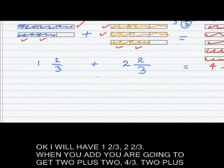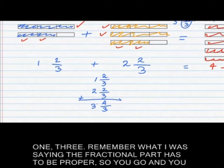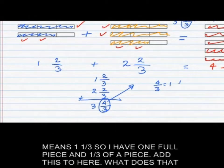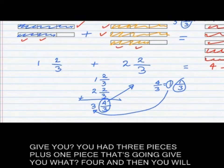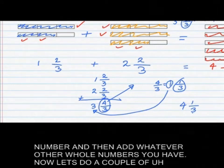Writing it vertically: one and two-thirds plus two and two-thirds. Two plus two gives four-thirds, and two plus one is three. Remember, the fractional part has to be proper. So figure out what four-thirds is — since it's improper, convert it: four-thirds is one and one-third. Add that to the whole number part: three pieces plus one piece gives four, and then you have one-third. So the answer is four and one-third. You never leave an improper fraction as is — change it into a mixed number and then add whatever other whole numbers you have.